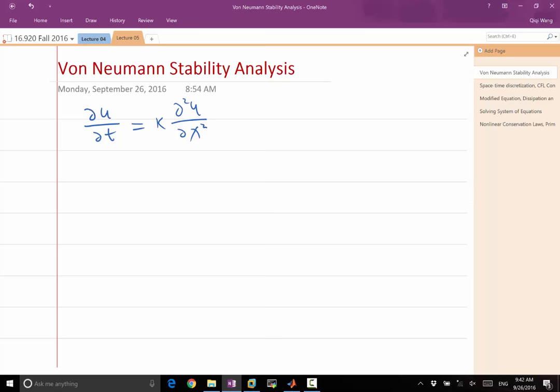It can only analyze the stability of your discretization itself, the discretization of the differential equation itself instead of the boundary. When you look at the differential equation and want to know if it's stable, you want to both make sure the discretization of the PDE is stable and also the boundary condition is well posed. The discrete boundary condition is well posed. Von Neumann stability analysis takes care of the first part.